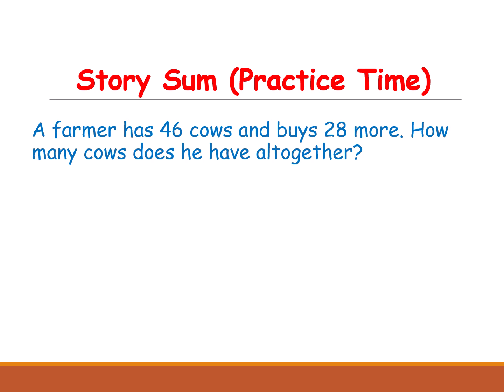Story sum practice 2. A farmer has 46 cows and buys 28 more. How many cows does he have altogether? Here we are using the new keywords 'altogether' and 'more' — these two are addition keywords.